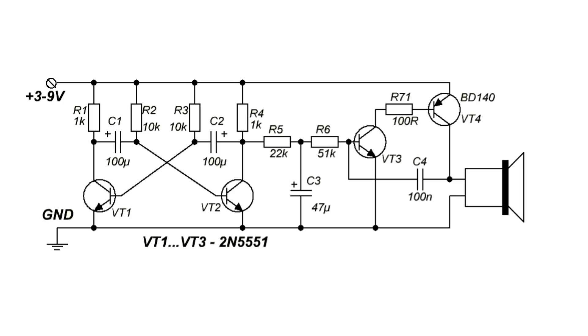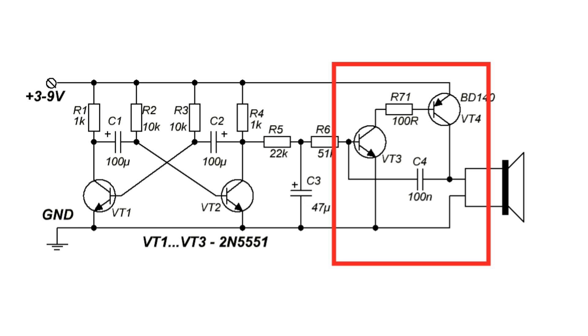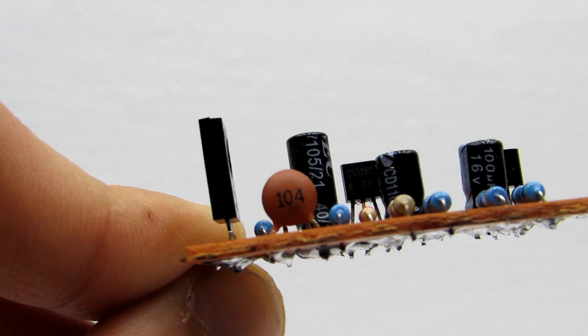The scheme consists of two generators. The first is low frequency and controls the second. I found the scheme on the net, but it did not work because the capacitance was too small in the second oscillator. I increased it to 0.1 microfarad.